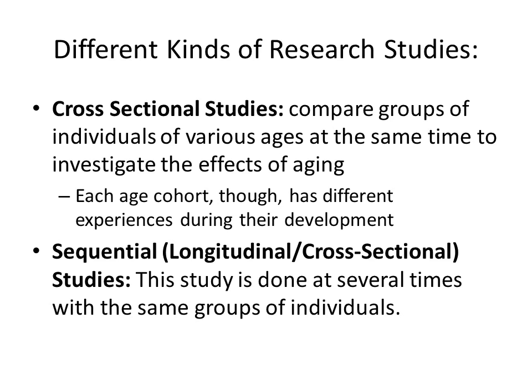So, different kinds of research studies. We have cross-sectional studies, which compare groups of individuals of various ages at the same time to investigate the effects of aging. Each age cohort has different experiences during their development — for example, being a teenager in the 1980s is very different from being a teenager in the 90s, the 2000s, or in the last four years.